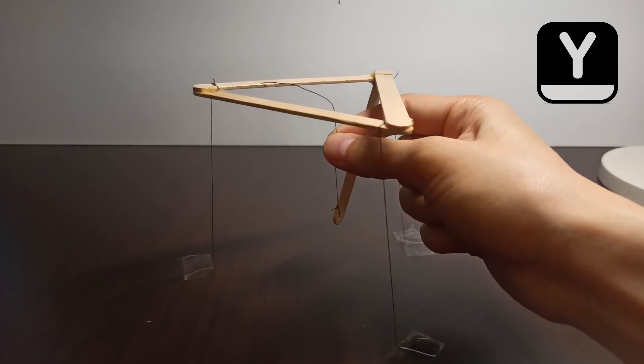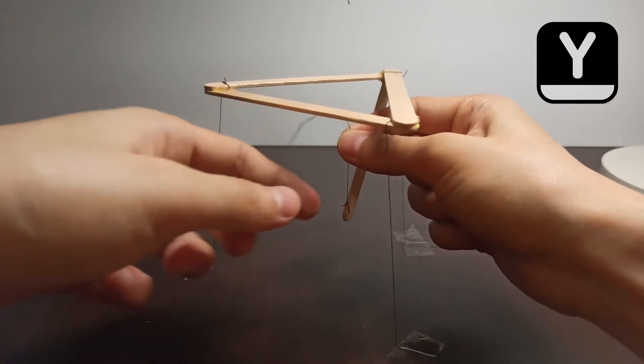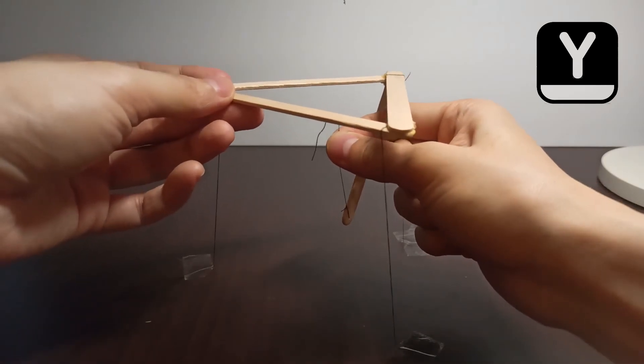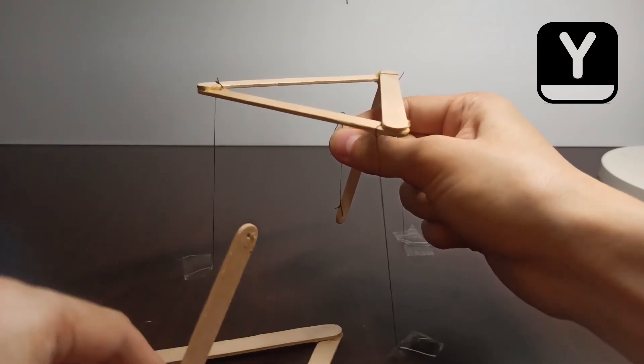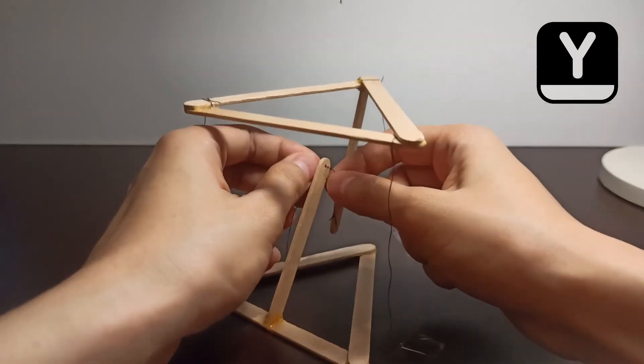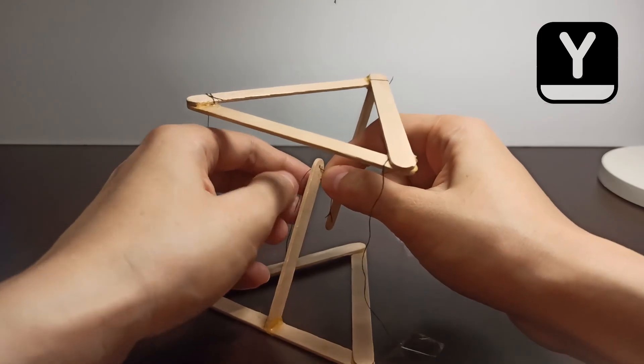By now you should understand how tense 3D structure works. Instead of holding the string with my hand, I'll just replace it with another similar triangle structure as a stand. Then just tie all strings to it, and that's it.